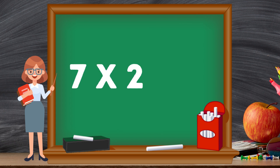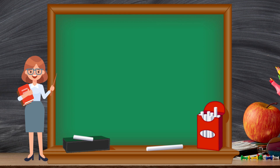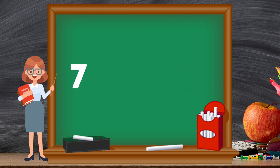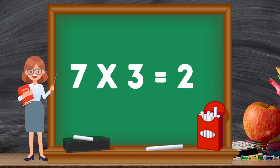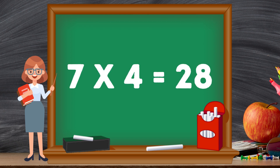7 twos are 14. 7 twos are 14. 7 threes are 21. 7 threes are 21. 7 fours are 28.